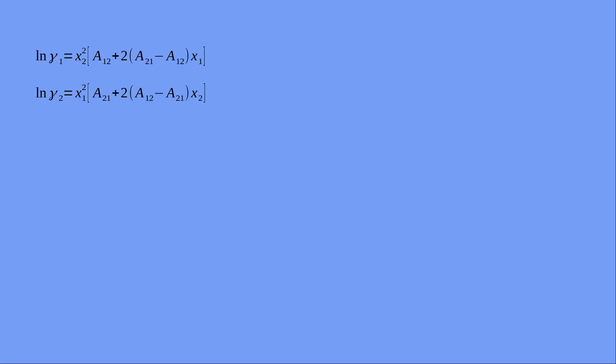From applying the differentiation rules for getting gammas to this equation, we will get ln gamma 1 and ln gamma 2 which is shown on the screen. This is the equation for Margules two parameter model. Here you have two parameters, A12 and A21.